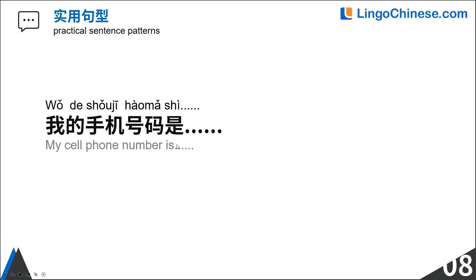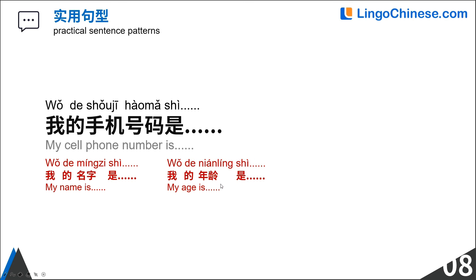我的手机号码是___。This structure can be extended: 名字 means name — 我的名字是___; 年龄 means age — 我的年龄是___; 爱好 means hobby — 我的爱好是___。